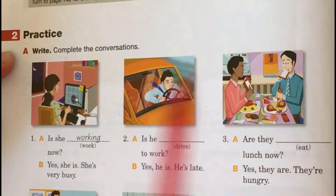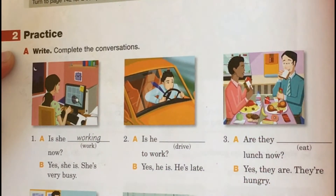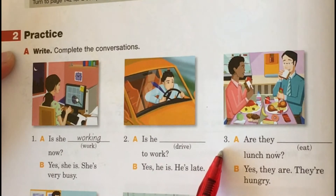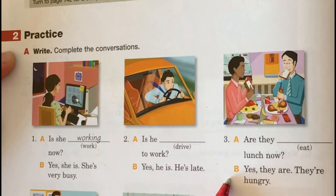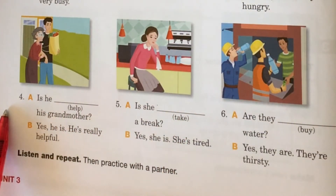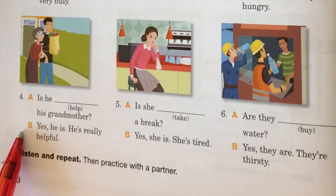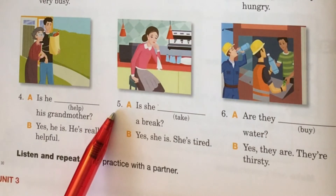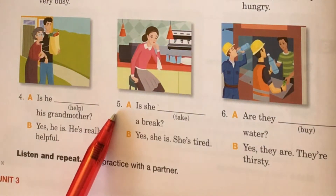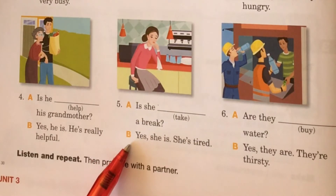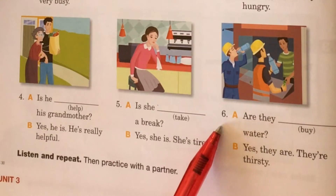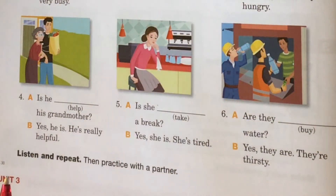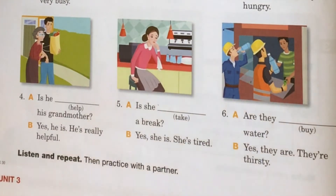So remember the spelling: driving. Number 3: Are they eating lunch now? Yes, they are. They're hungry. Number 4: Is he helping his grandmother? Yes, he is. He's really helpful. Number 5: Is she taking a break? Yes, she is. She's tired. Number 6: Are they buying water? Yes, they are. They're thirsty.